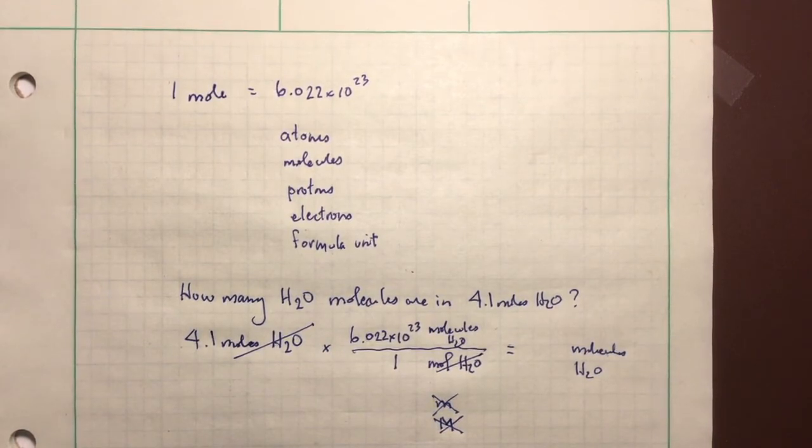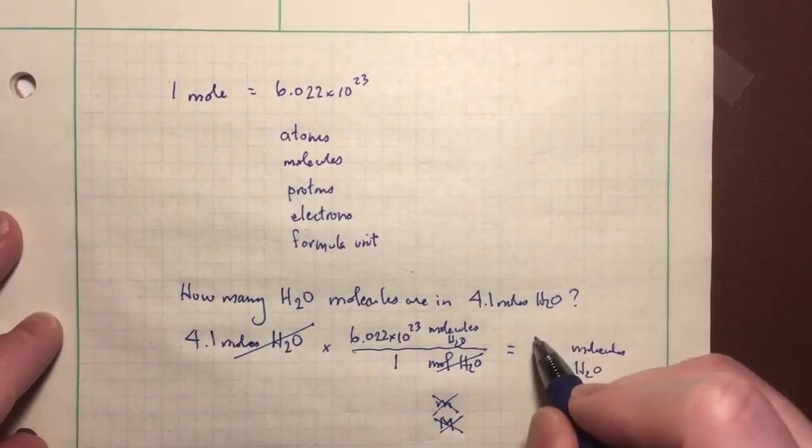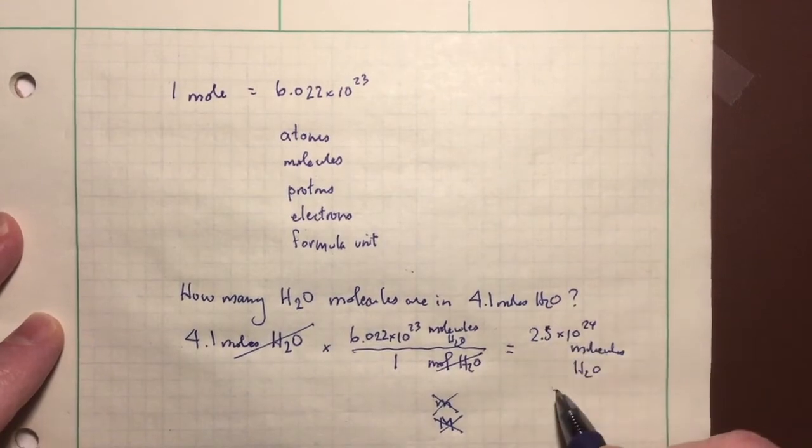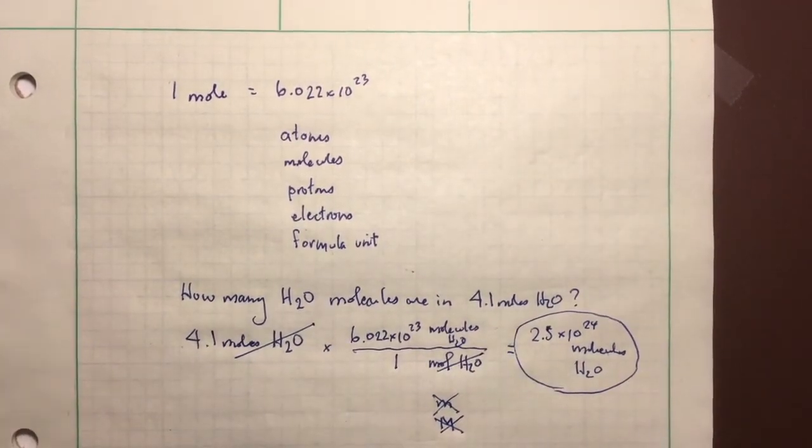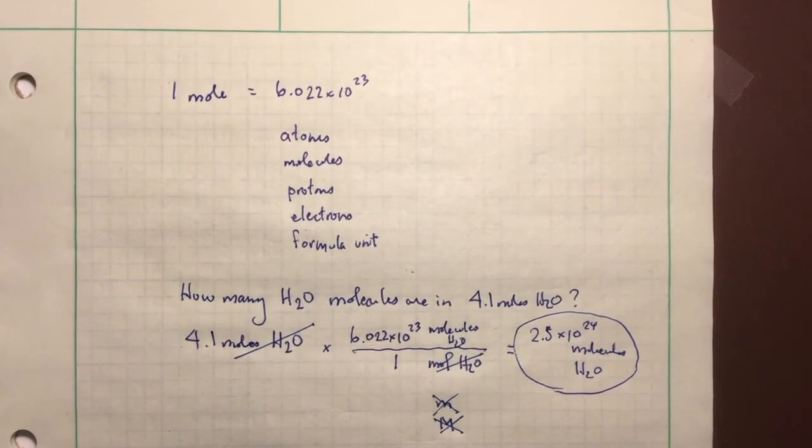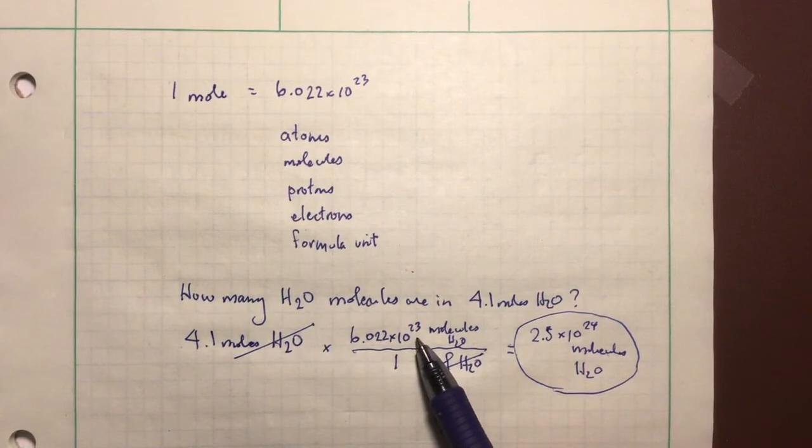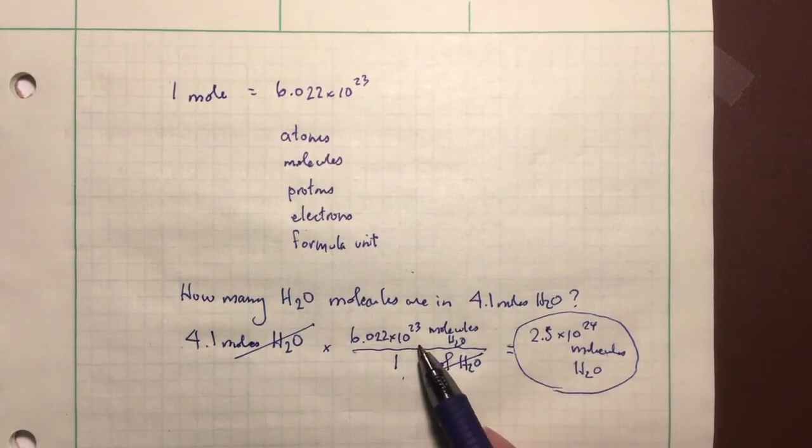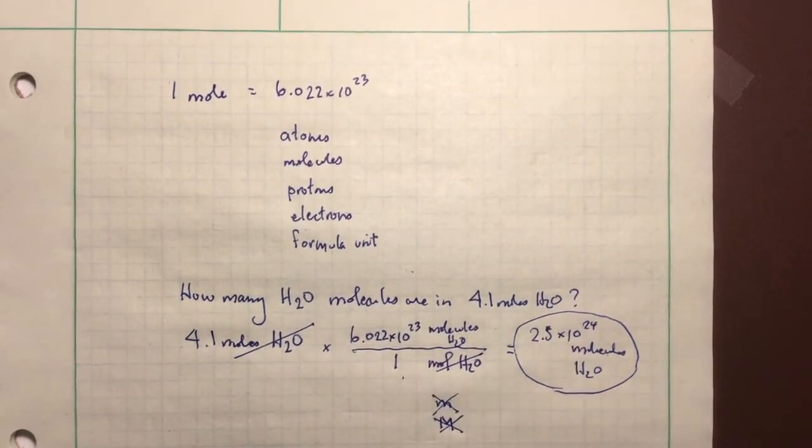4.1 times 6.022 times 10 to the 23rd equals, 2 sig figs, 4 sig figs, multiplication. I need 2 sig figs, so my answer is 2.5 times 10 to the 24th. Circle that. And there's my answer, 2.5 times 10 to the 24th molecules. Does that answer make sense? Well, yes, there would be Avogadro's number of molecules in one mole. But we have 4.1 moles, so we should have 4 times that number, which is that number right there.